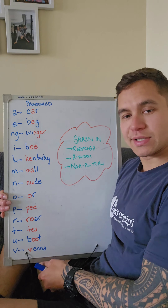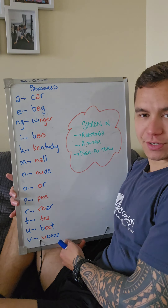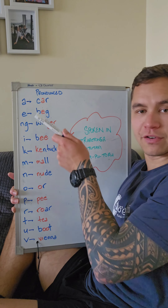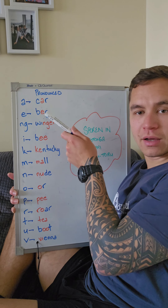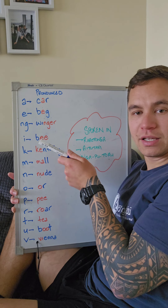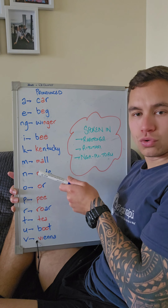It consists of 13 letters. Focusing on the far left, we have: a, e, ngā, i, ke, mo, nu.